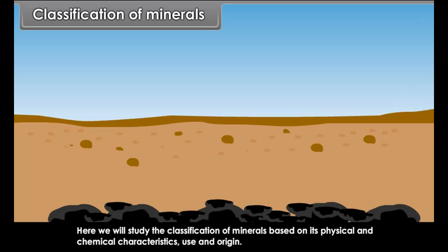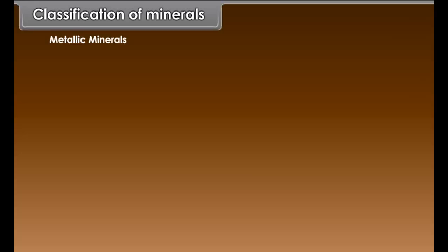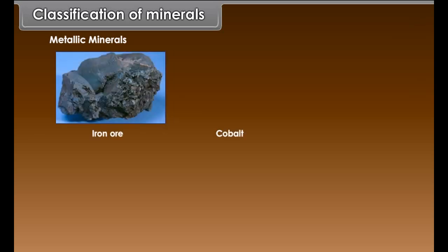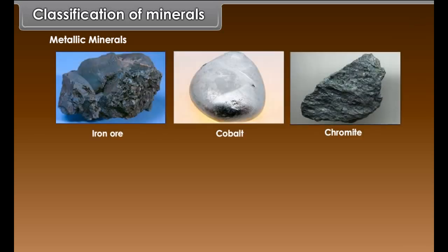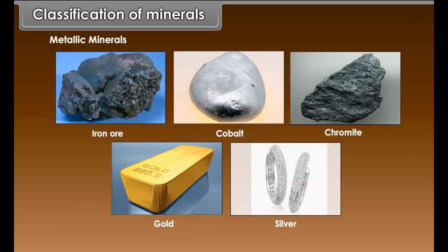They are metallic and non-metallic minerals. Metallic minerals are those minerals which have metals. Examples include iron ore, cobalt, chromite, gold, silver, etc.